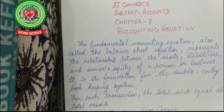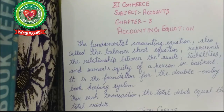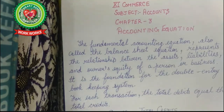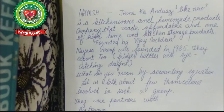The fundamental accounting equation, also called the balance sheet equation, represents the relationship between the assets, liabilities, and owner's equity of a business or a person. It is the foundation for the double entry bookkeeping system. For every transaction, debits are equal to credits — on the left-hand side we have debits and on the right-hand side we have credits. All debits are always equal to all credits.